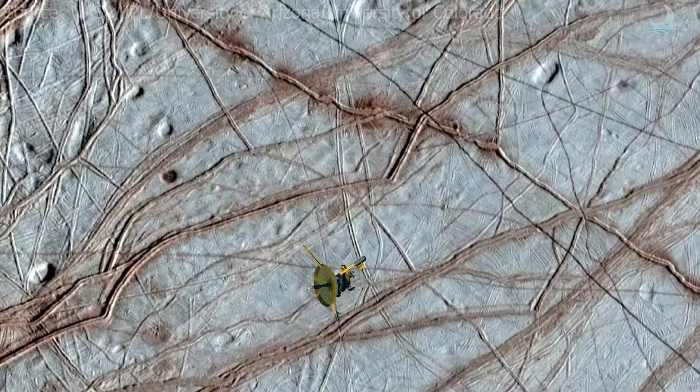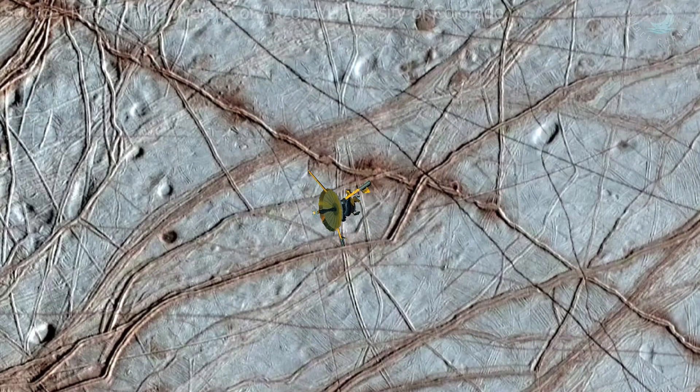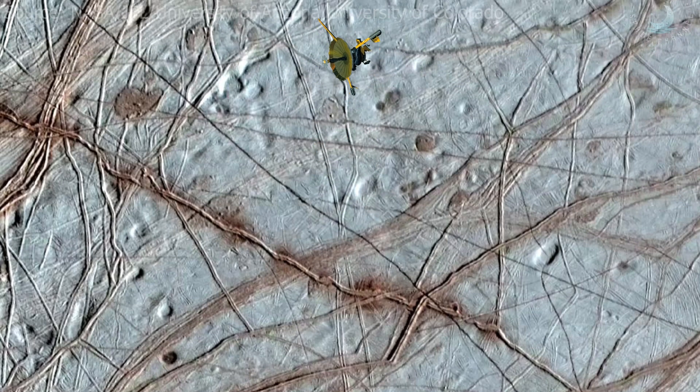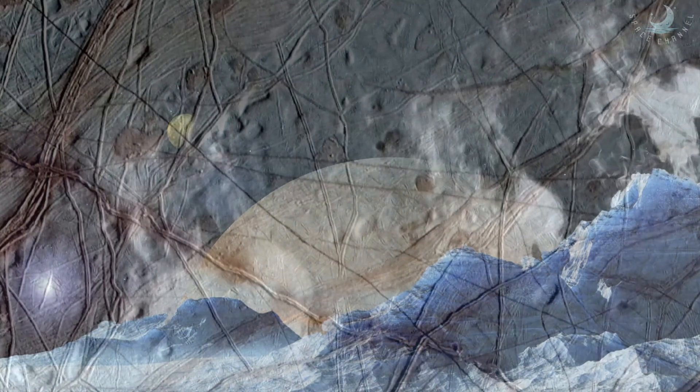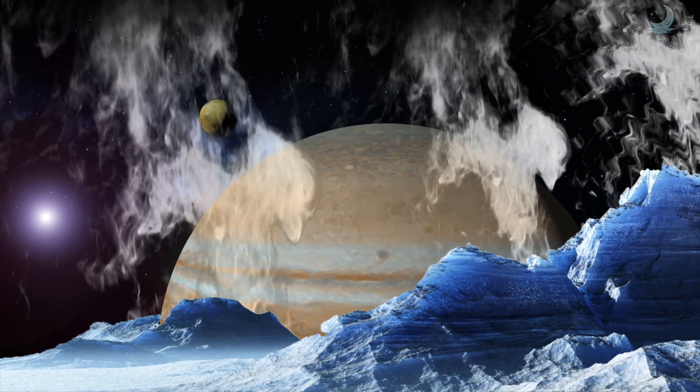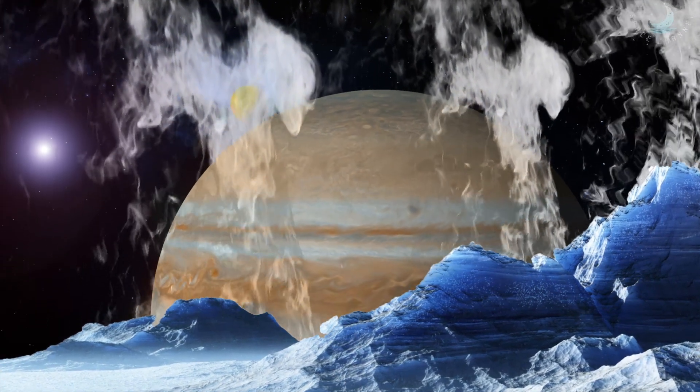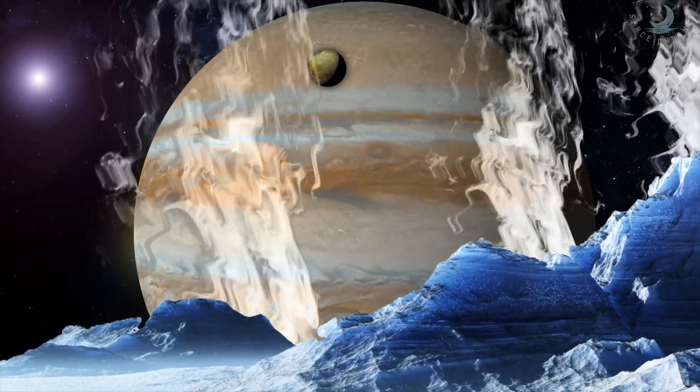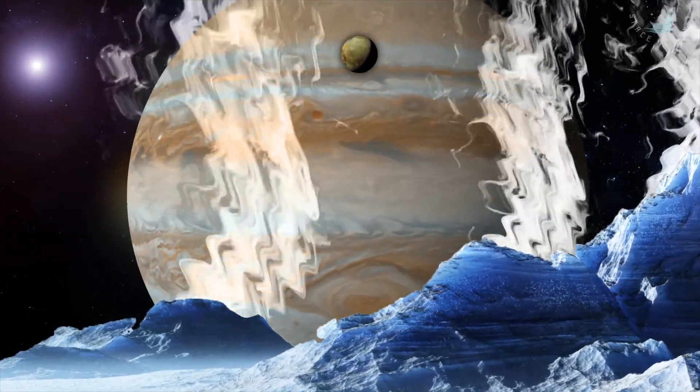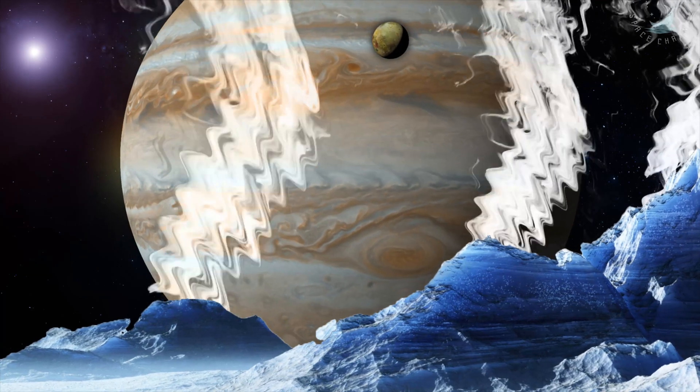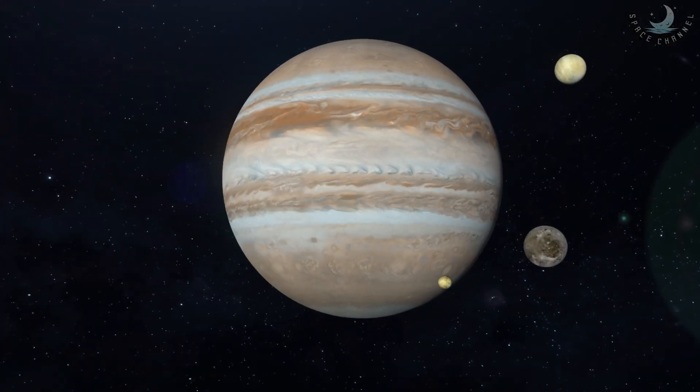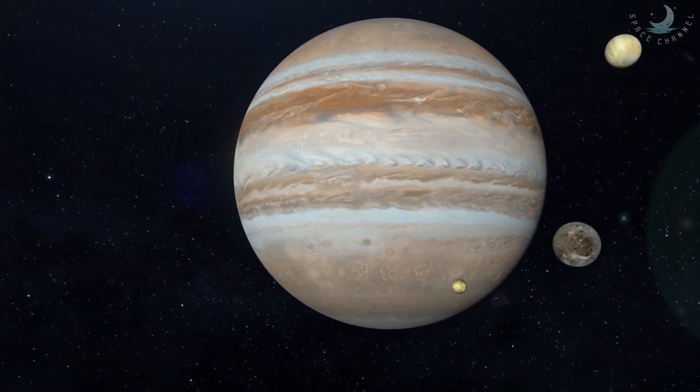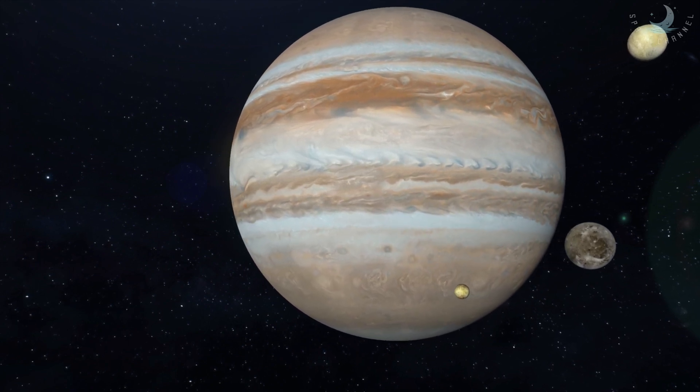Europa's most striking surface features are a series of dark streaks crisscrossing the entire globe called lineae. The most likely hypothesis is that the lineae on Europa were produced by a series of eruptions of warm ice as Europa's crust slowly spreads open to expose warmer layers beneath. These various fractures are thought to have been caused in large part by the tidal flexing exerted by Jupiter.